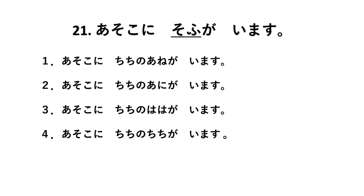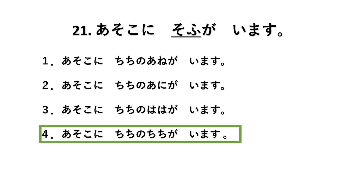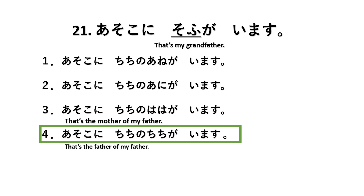Last item — there are only 21 items. Asoko ni sofu ga imasu. The correct answer: sofu means chichi no chichi — grandfather is the father of my father. The other options are: mother of my mother (chichi no haha), sister of my father (chichi no ane), and brother of my father (chichi no ani).